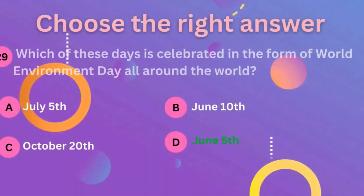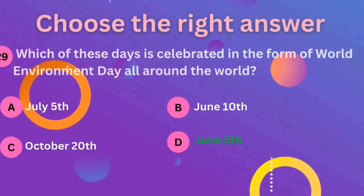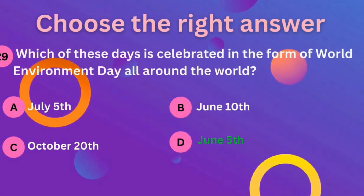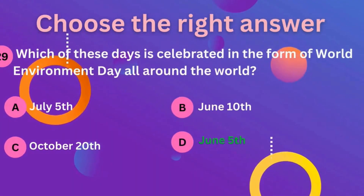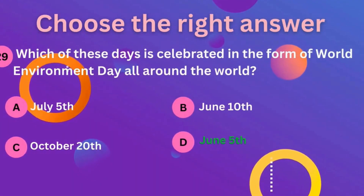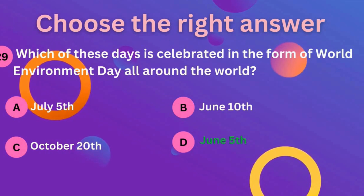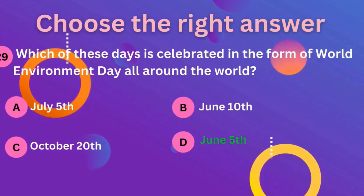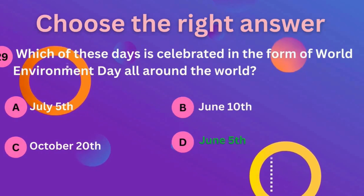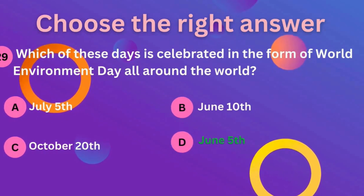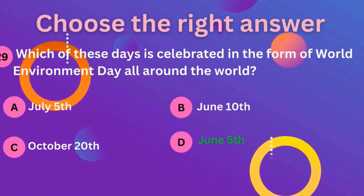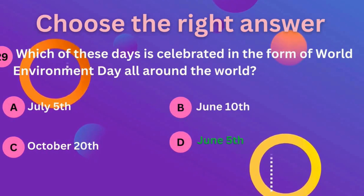Question 29: which of these days is celebrated as World Environment Day all around the world? D is the correct answer — that is 5th June.